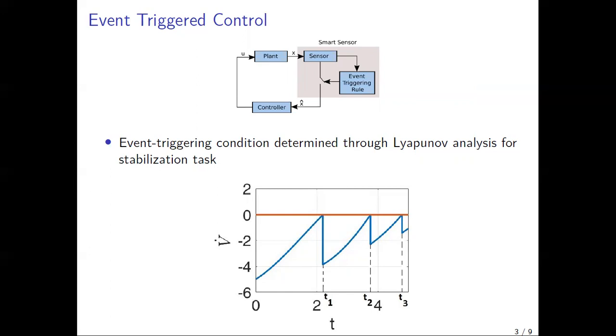So in this example, we monitor the time derivative of a candidate Lyapunov function v, and whenever v hits zero, an event is triggered. That is, the state information is communicated to the controller and the control input to the plant is updated. Hence, v becomes negative and the process continues.